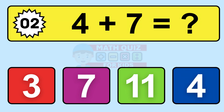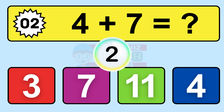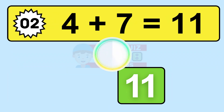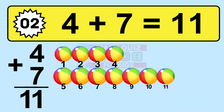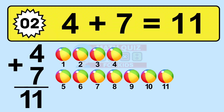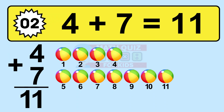Question two: four plus seven equals what? So the answer is four plus seven is 11. Let's count it. One, two, three, four, five, six, seven, eight, nine, ten, eleven.